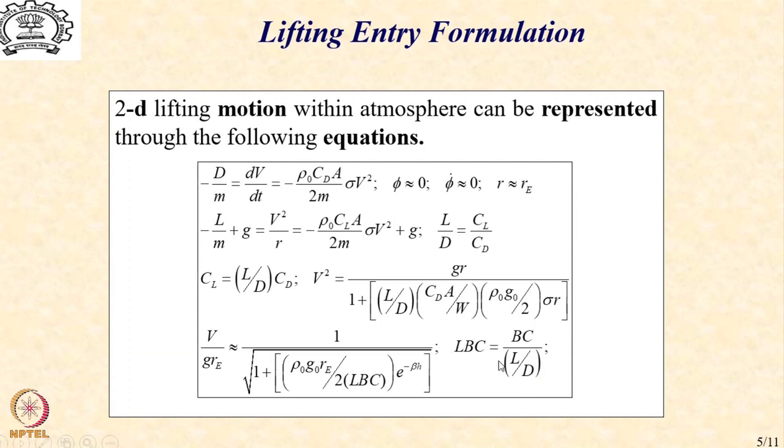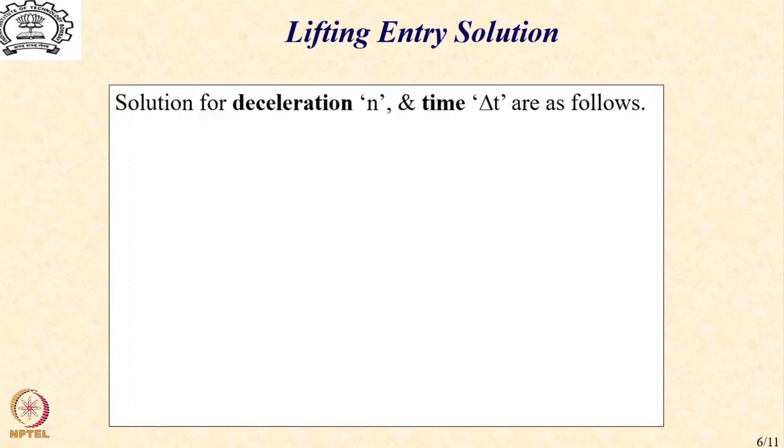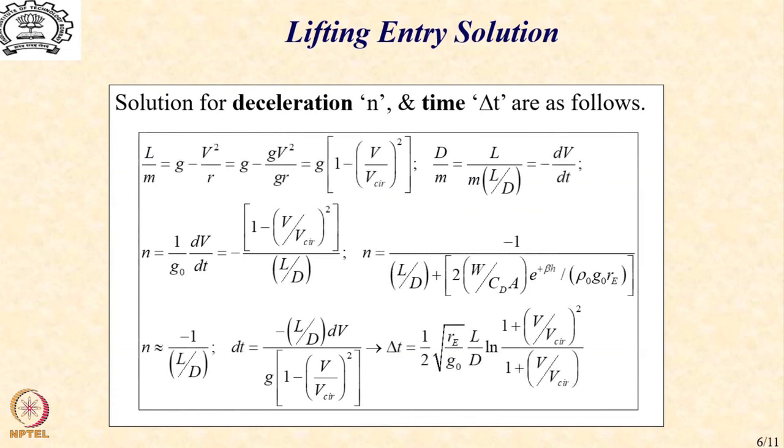So, similar to the ballistic entry, even in the context of lifting entry, we have a similar parameter that gives us a velocity solution as a function of the lifting ballistic coefficient. With this, we can now obtain the solution for the deceleration and that is number of gs and the total time taken for the trajectory as follows. It just involves solving the applicable differential equation.